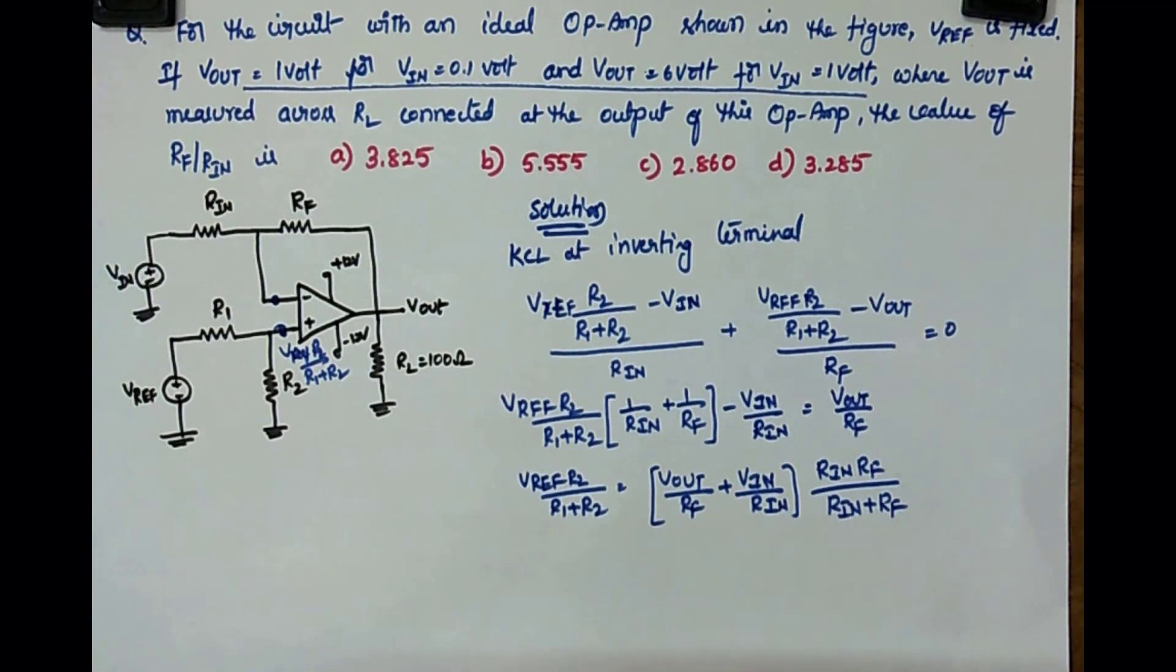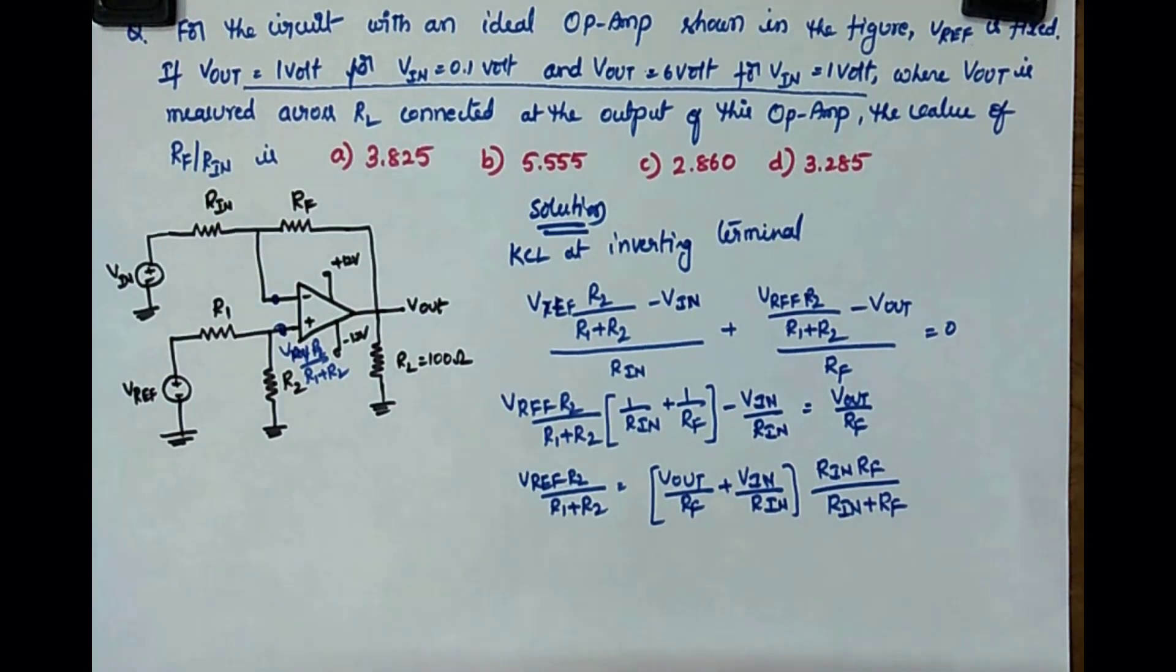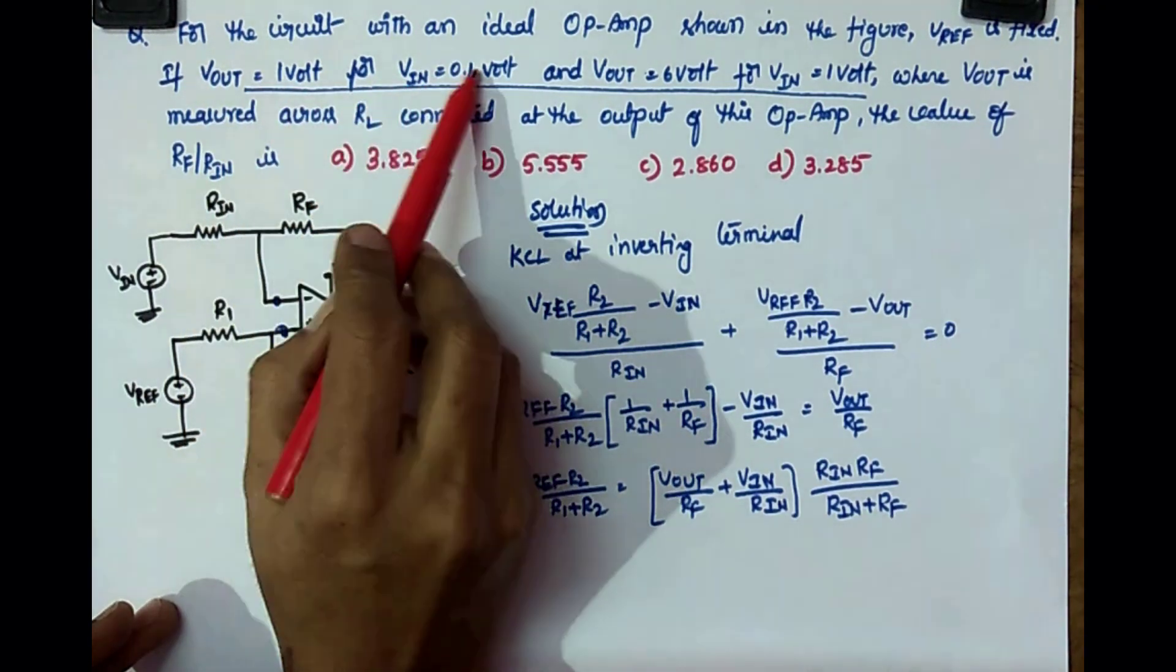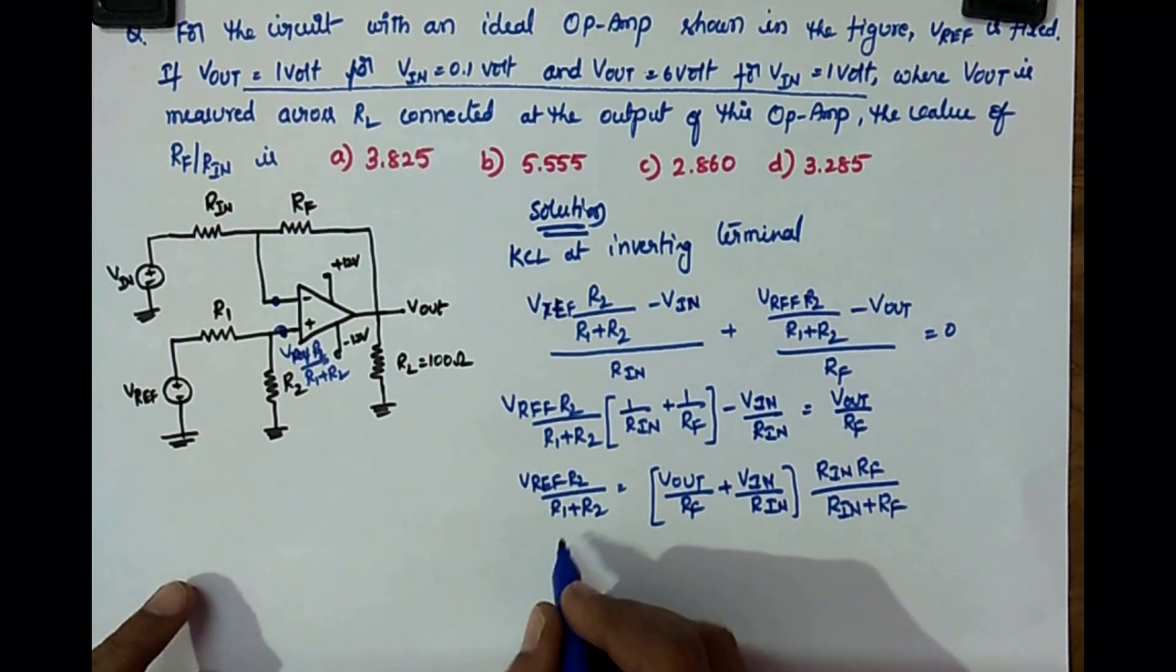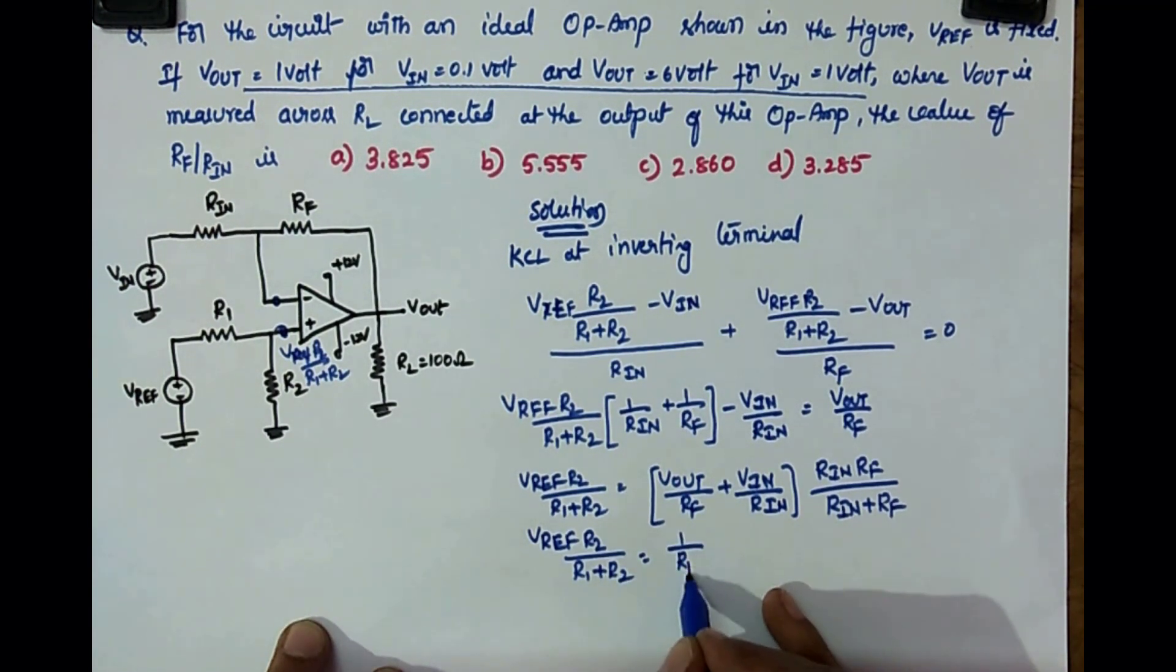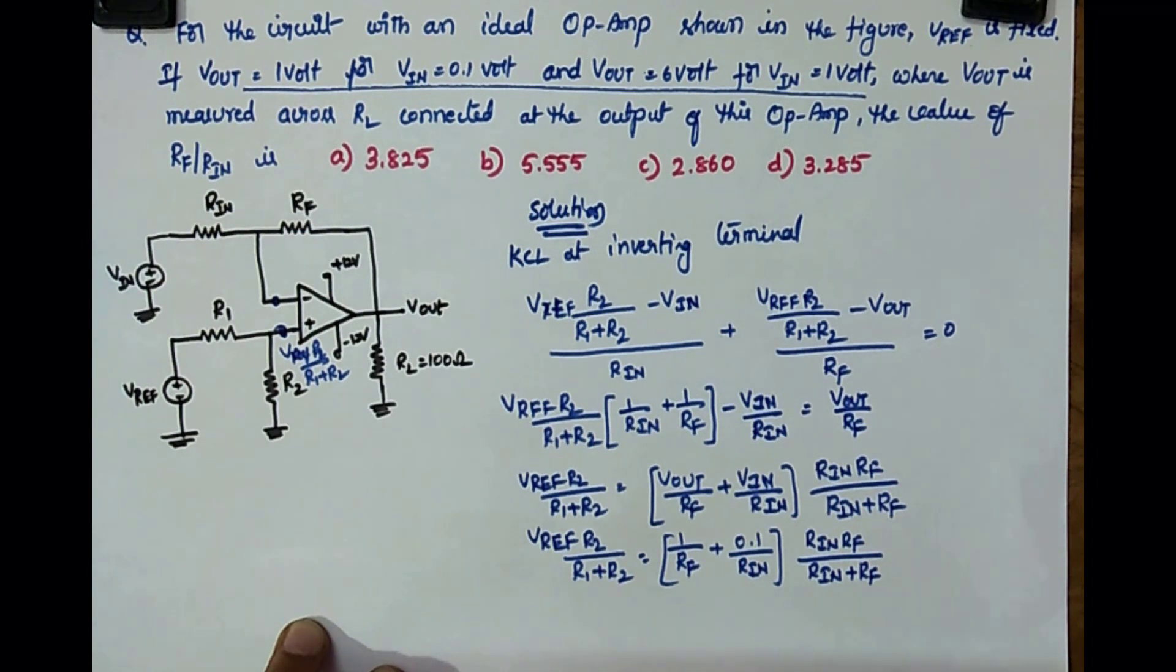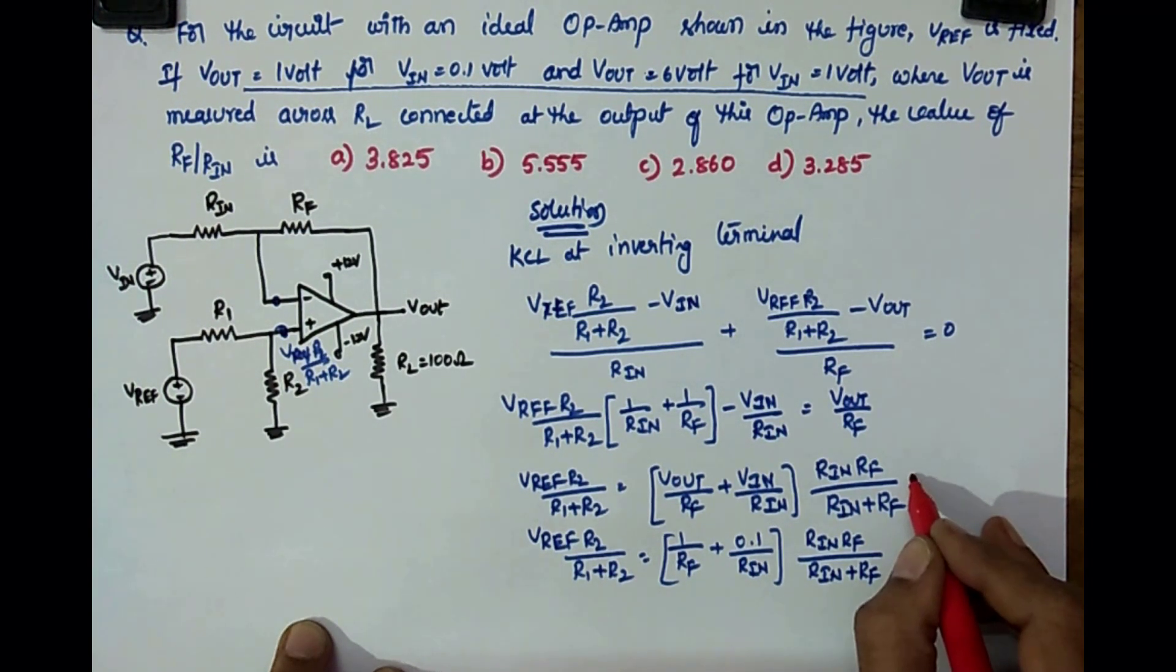V reference into R2 by R1 plus R2 is equal to Vout by Rf plus Vin by Rn into Rn Rf by Rn plus Rf. So now evaluate this equation for two cases. What is the first case? The first case is Vout 1 volt for Vin 0.1, so if you keep that, I will get V reference into R2 by R1 plus R2 is equal to, yes, what is Vout 1, so 1 by Rf plus what is Vin 0.1 by Rn into Rn Rf by Rn plus Rf. Let me take this as equation number 1 and this as equation number 2.